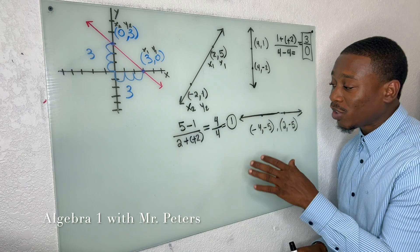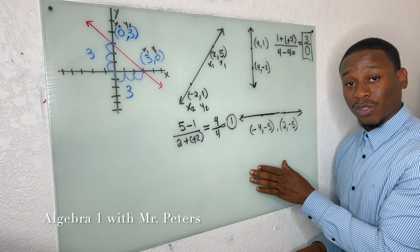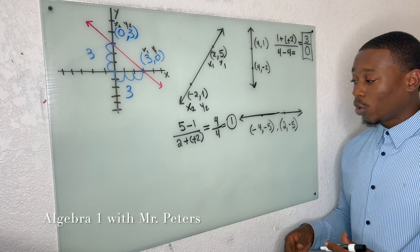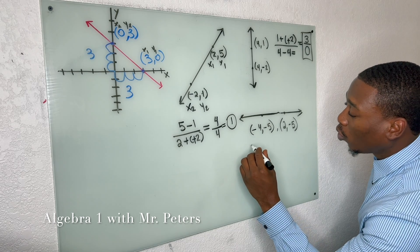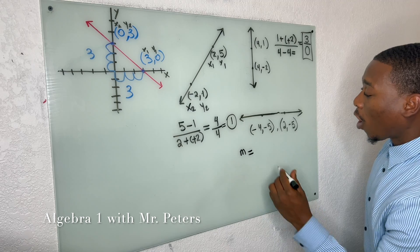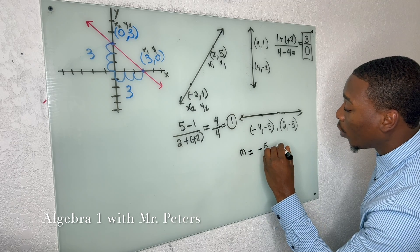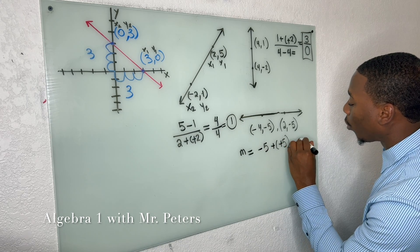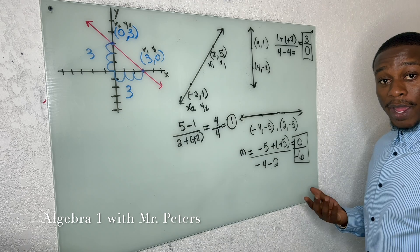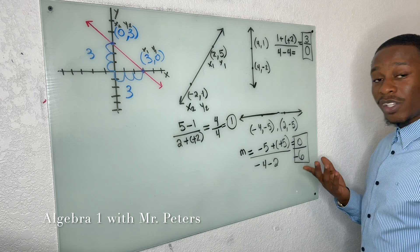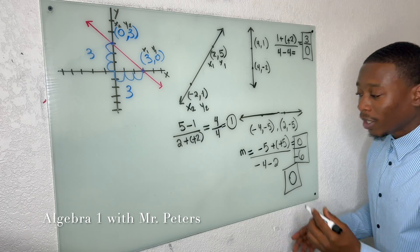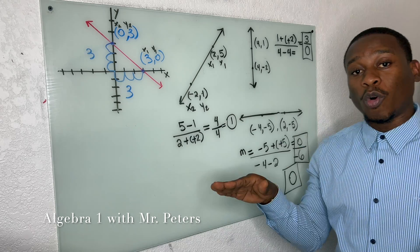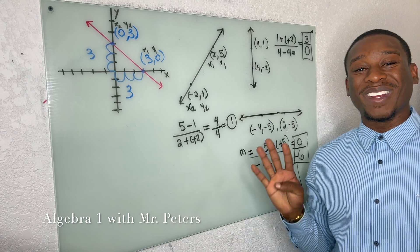A lot of times students get confused between the vertical line and the horizontal. The horizontal line does have a slope — it's just that the slope is 0. When we solve, we notice the y-values are the same, so we get a 0 on the top of our fraction. We can divide, but our answer is just 0. There is no rise — it's just a straight line forward. So those are the four different kinds of slope.